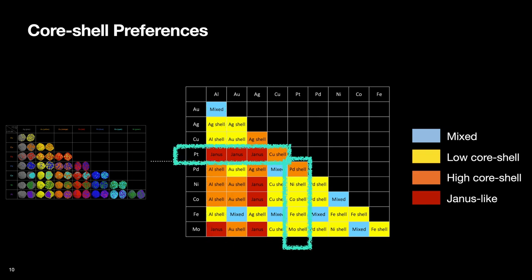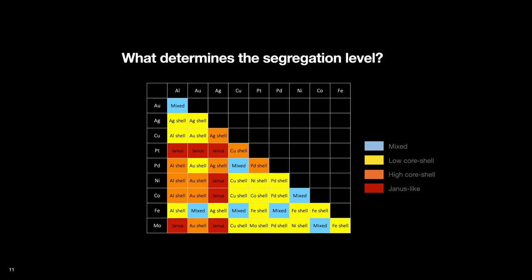On the other hand, platinum tends to occupy the core when it is mixed with other metals. So once we have these results, we investigated further to find the hidden trend, the rules that determine the segregation level for a given combination.